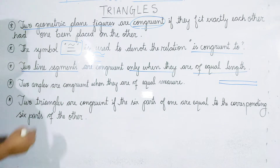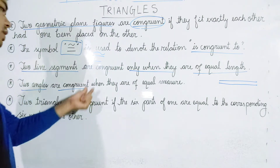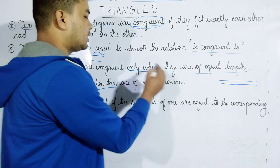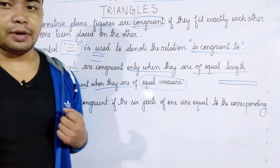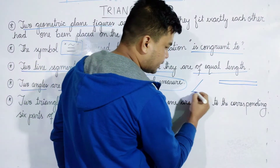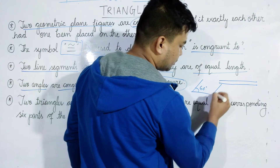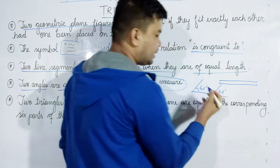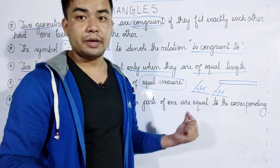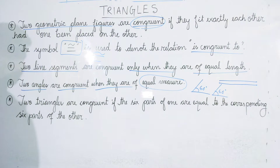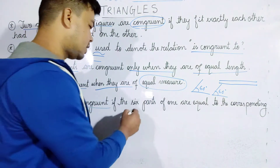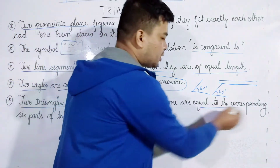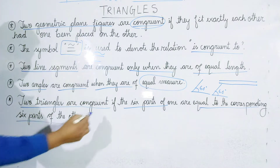Two angles are congruent when they are equal in measure. If the six parts of one triangle are equal to the corresponding six parts of the other, the triangles are congruent.